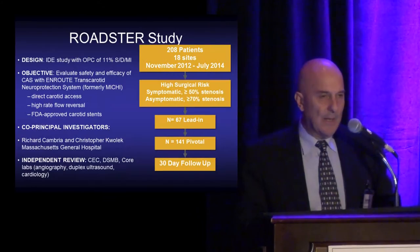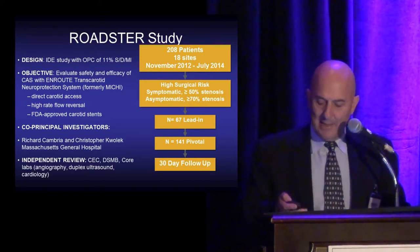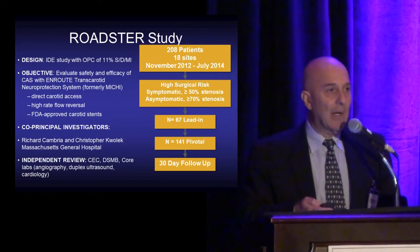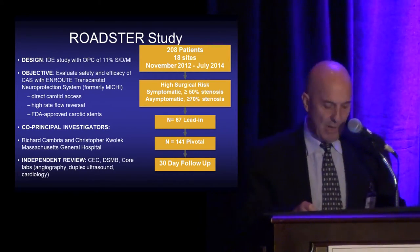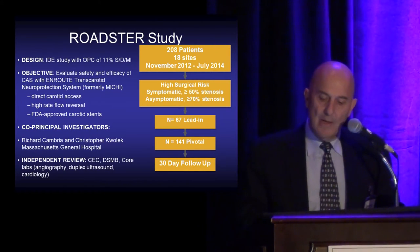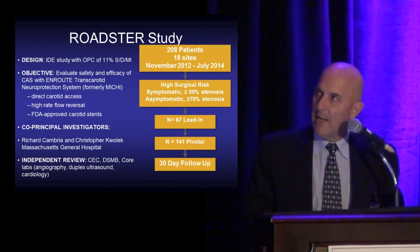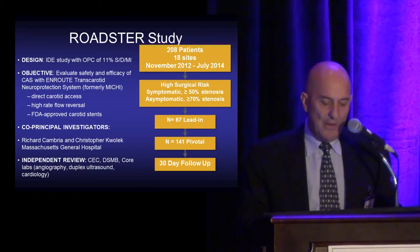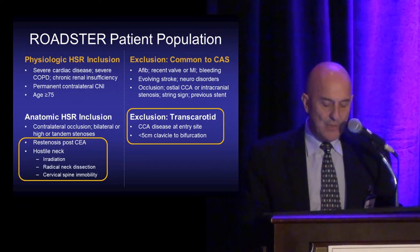A study completed in the United States following a European study is the Rooster study. Notably, the two principal investigators are vascular surgeons who were previously against the transfemoral carotid route but are now embracing this less invasive cervical access approach. The study included 208 patients at 18 sites — high surgical risk, symptomatic, and asymptomatic patients. Secondary endpoints included cranial nerve injury incidence. Patients with hostile necks were included.